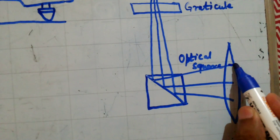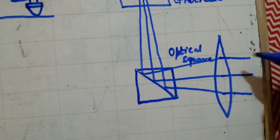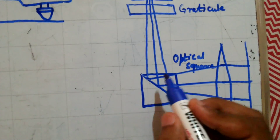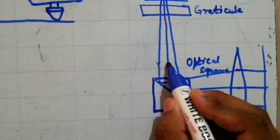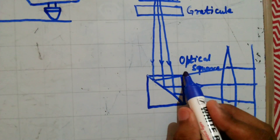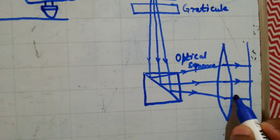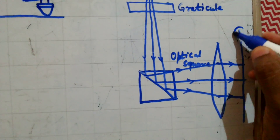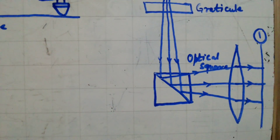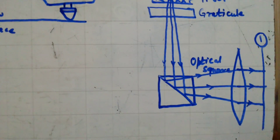It then goes to the collimating lens, which is shown over here. With this, it then goes to the reflector or the job which is kept over here. So it comes from the source of light, then because of the optical square it changes direction by 90 degrees, and this is the reflector or the job.